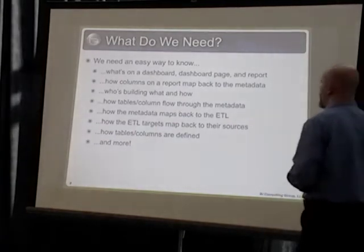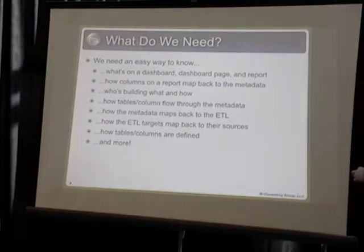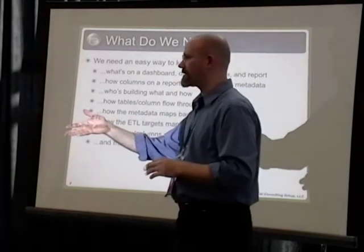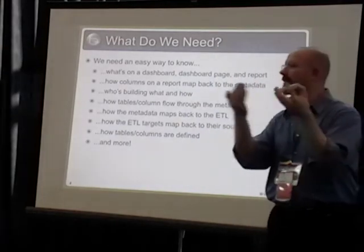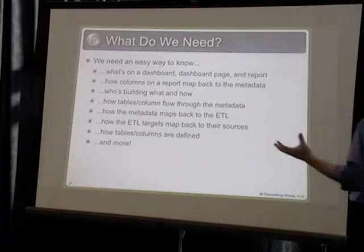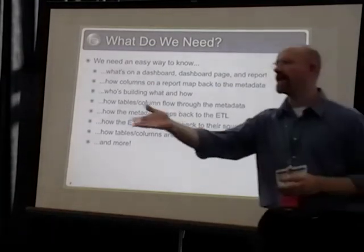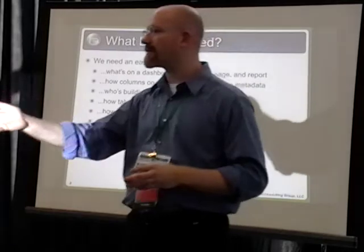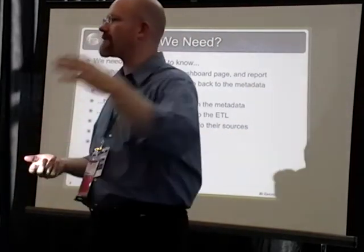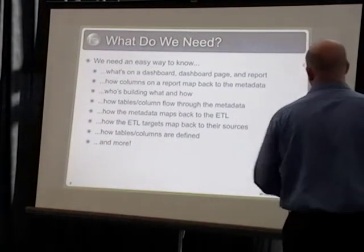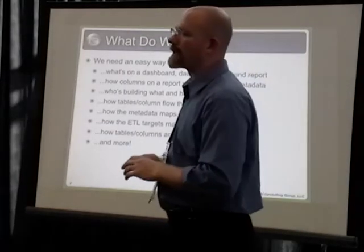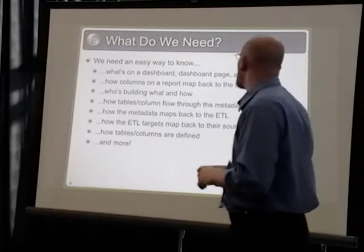How are tables and columns flowing back through the metadata? How does the metadata map back to the ETL? You mentioned you had a pretty good handle on the ETL but maybe not so much on the report side — you've got to connect those two things together. How do the ETLs bring things back to their sources? If you're trying to find out where problems are in the source data coming through, you have to know the fields being populated in the source system to find out how those affect reports. How are you defining certain tables and columns? And there's much more — that's just a quick list.